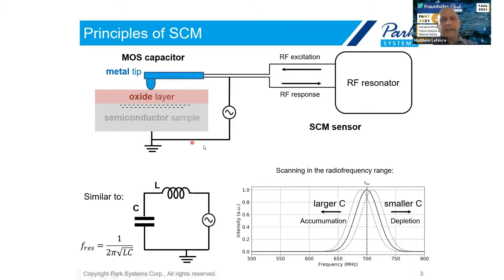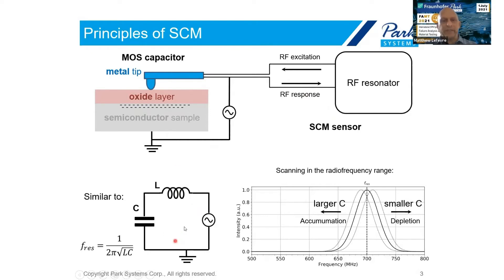If we apply an AC bias between these two, we alternately get depletion and accumulation of charge carriers beneath the surface. The SCM sensor, which we see on the right, is basically a radiofrequency resonator which is loaded by this tip and sample. The sensor is similar to the circuit we see here, which is an inductor and capacitor in series.